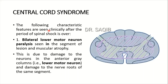The following characteristic features are seen clinically after the period of spinal shock is over in central cord syndrome. Number one: bilateral lower motor neuron paralysis is seen in the segment of the lesion, along with muscular atrophy. This is due to damage to the neurons in the anterior gray columns, which you can see here, as well as damage to the nerve roots of the same segment.